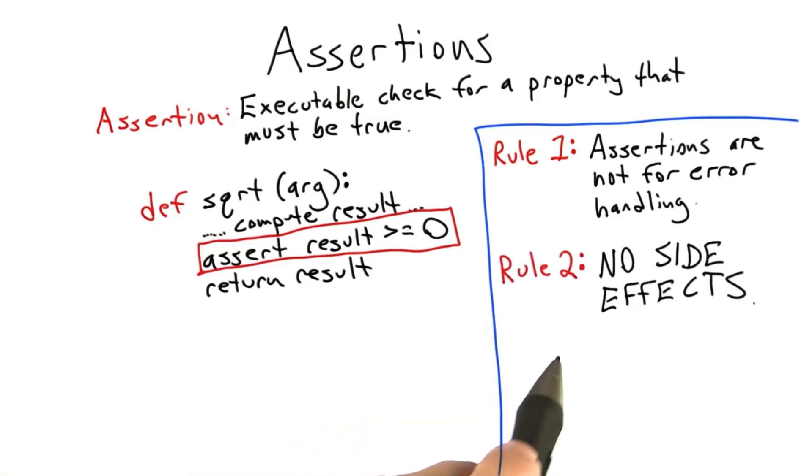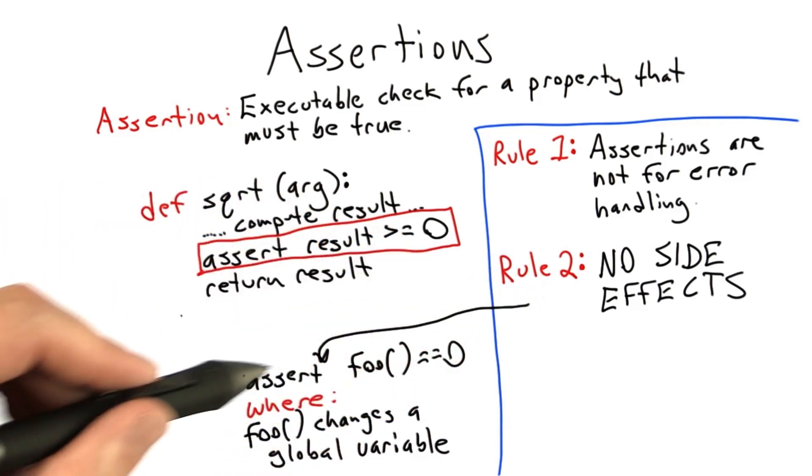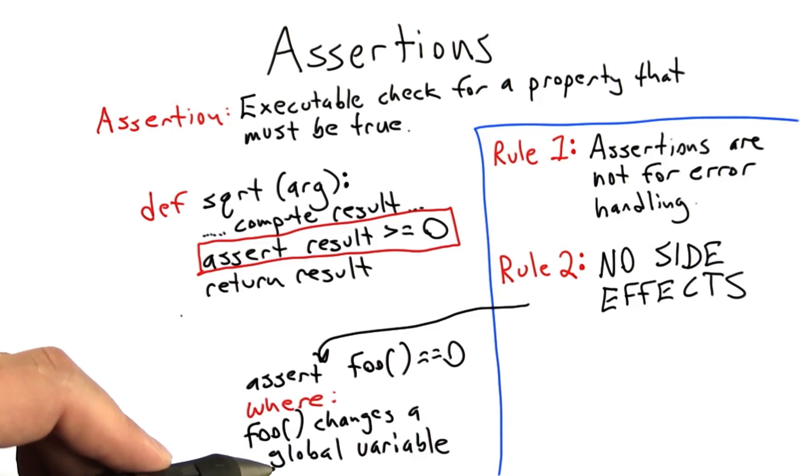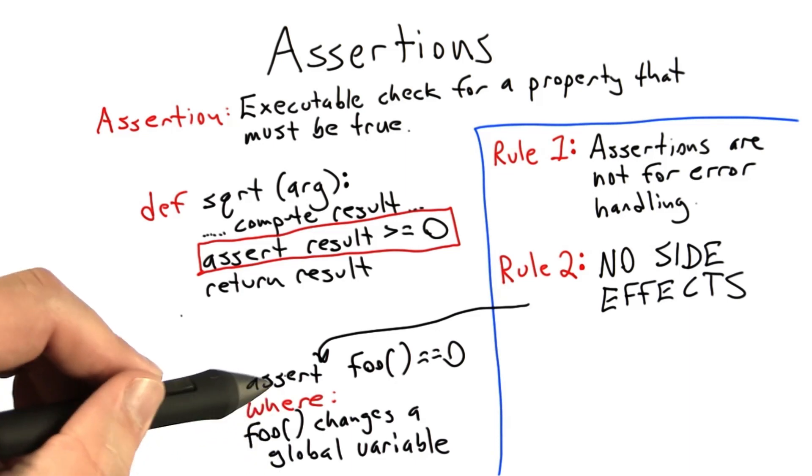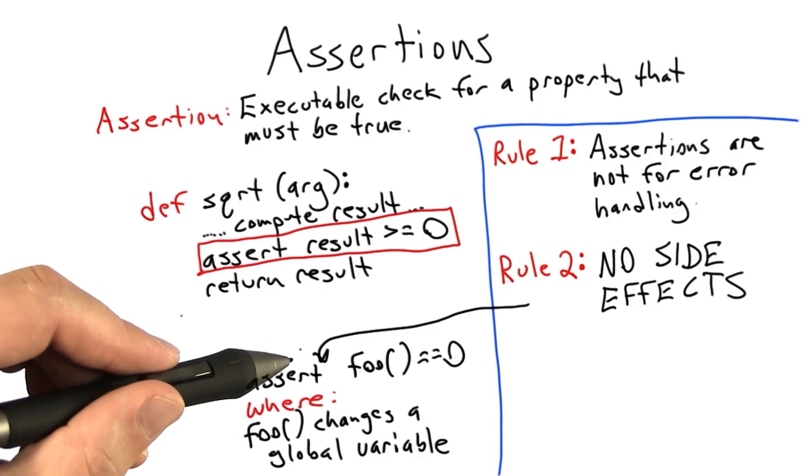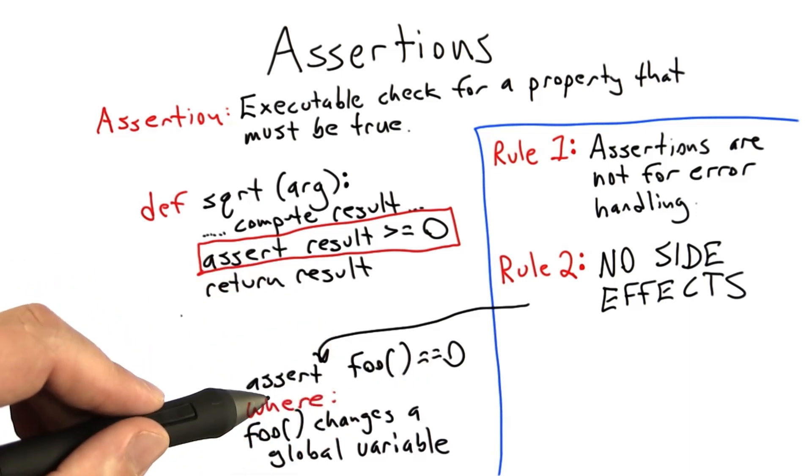Rule 2, and this is really important, is never make assertion calls that have side effects. An example of a side effecting assertion would be asserting that a function foo returns the value 0, but where foo changes the value of global variable. And the problem with side effects and assertions are, when we turn on optimization in Python, it's going to drop all of the assertions in our program.